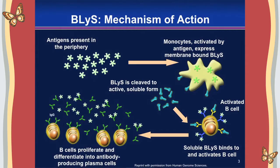The mechanism of action is: once an antigen, foreign bacteria, or virus stimulates monocytes, white blood cells, or neutrophils, they produce BLyS and secrete it to the membrane — the outer surface of the cell — where it is cleaved and becomes biologically active. It then binds to receptors on B-cells, inducing them to differentiate into antibody-producing, auto-antibody-producing, or memory B-cells.